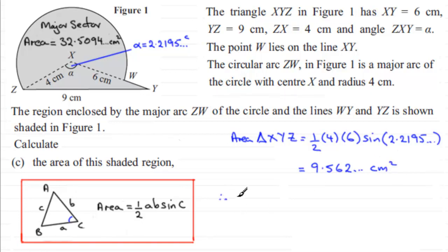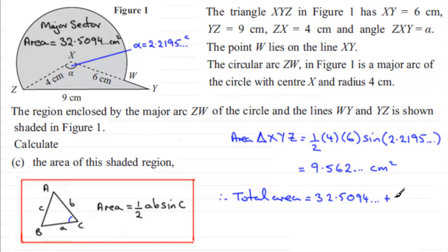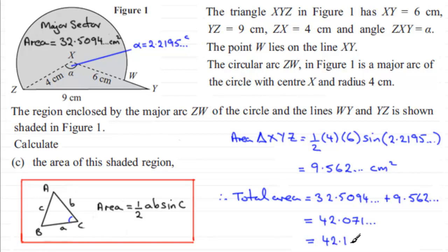So when it comes to working out the total area, we've got therefore the total area is going to equal the area of the major sector, which we found out earlier was 32.5094 and so on, plus the area we've just found out for the triangle, which is 9.562 and so on. Adding these two values together you get 42.071 and so on. We're going to round this to three significant figures: 42.1 cm² to 3SF.